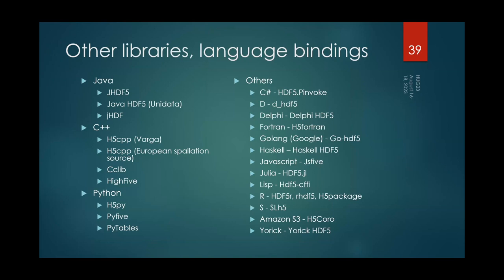It wasn't just Python though. There's a small partial list of other libraries and language bindings — several in Java, C++, Python of course, and other languages, even Yorick and Golang. This is a good example of how important it is for people to be able to put their own way of thinking about writing code and dealing with their data on top of HDF5, and the importance of us working with them.